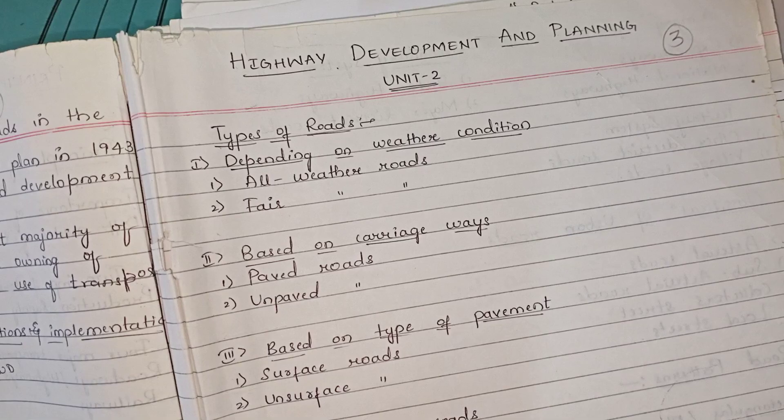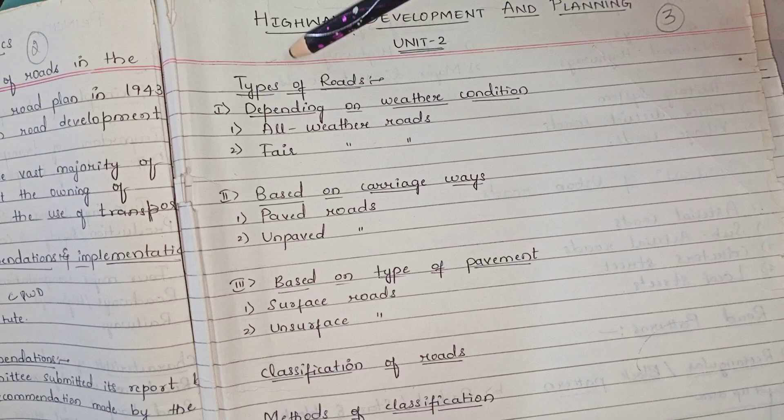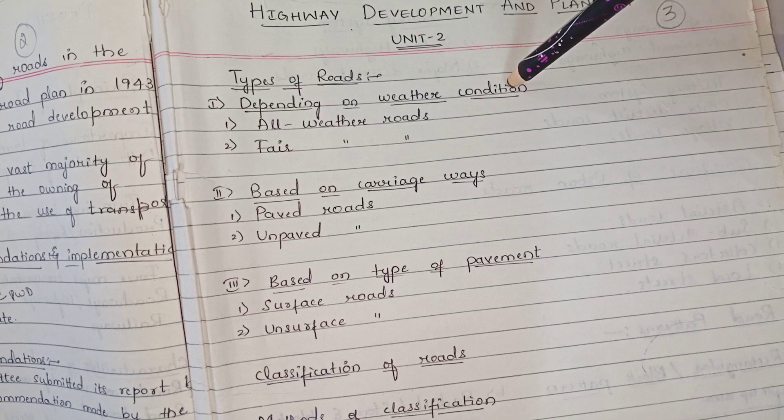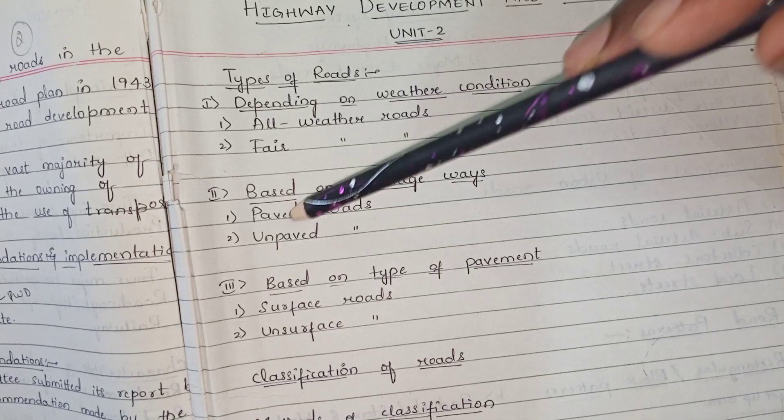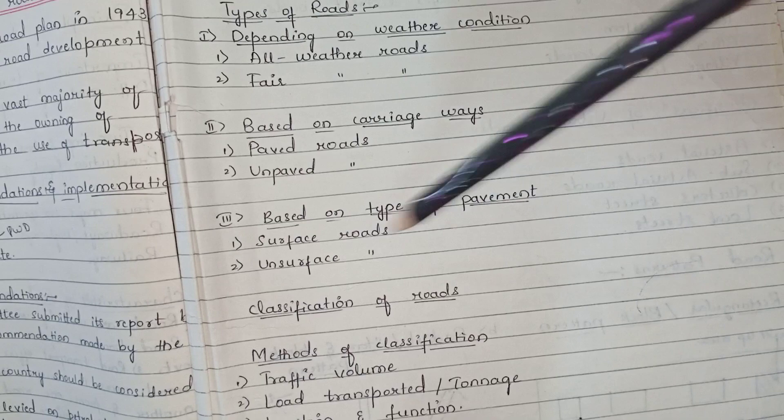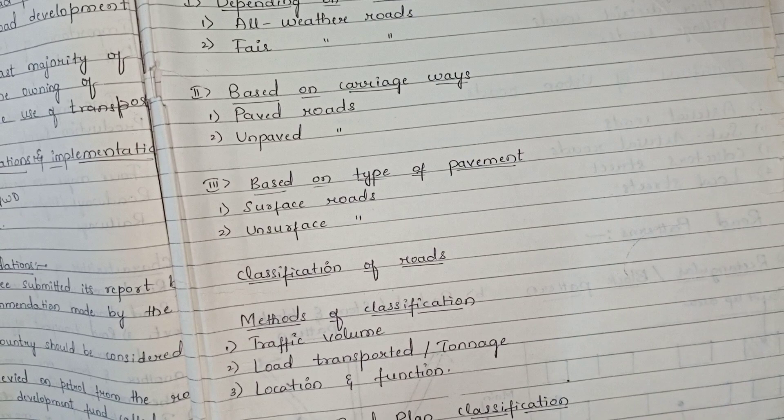Highway development and planning — types of roads. Depending on weather condition, two types: all-weather roads and fair-weather roads. Based on carriageway: paved roads and unpaved roads. Based on type of pavement: surface roads and unsurfaced roads. These are the types of roads depending on weather condition, based on carriageway, and based on type of pavement.